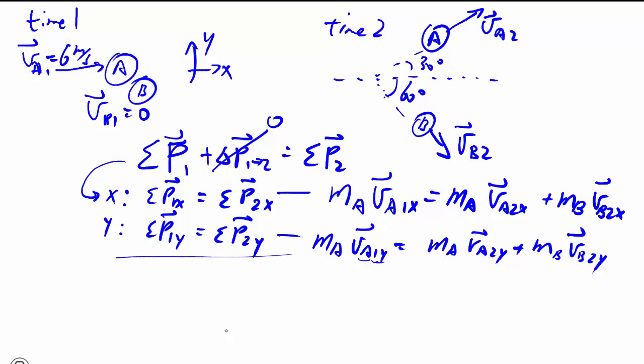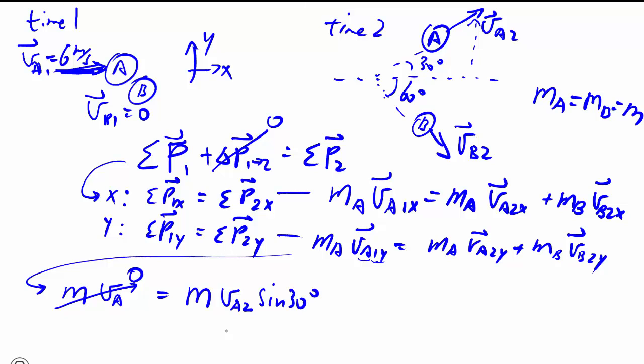Let's look at the Y direction first. In this case, I'll actually call my MA because they're identical pucks in this case. It's all M. VA1Y, well, there's nothing in the Y direction because this is perfectly horizontal. So that all goes to zero. It's equal to M VA2. The Y component is over here. And that's going to be sine 30 degrees plus M VB2 sine, in this case, 60 degrees because it's this part here. And this is negative.